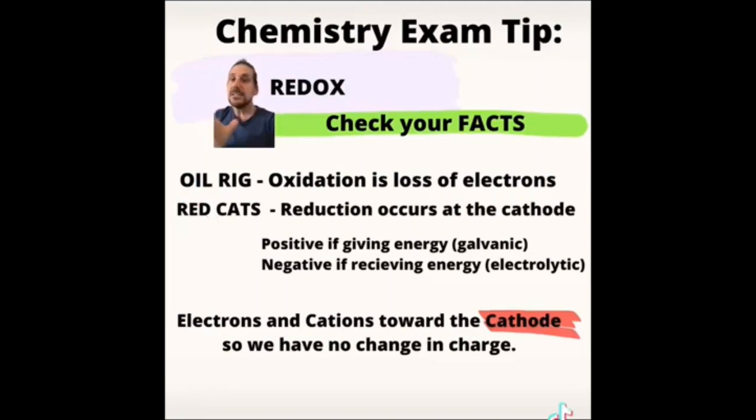Chemistry exam tip number seven. Check your facts. This has in particular to do with redox. In chemistry, there are certain definites and certain facts that you have learnt. This comes in play particularly with redox and you have acronyms to remember those facts. But these are easily overlooked when trying to answer questions. So the biggest one with redox is OIL RIG and RED CATS. Oxidation is the loss of electrons and reduction is the gain. What this means is that when you're answering a question or you're writing an equation as an oxidation reaction, you need to ensure that you have shown losing electrons and that those electrons are on the right.